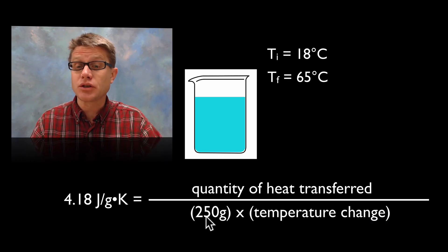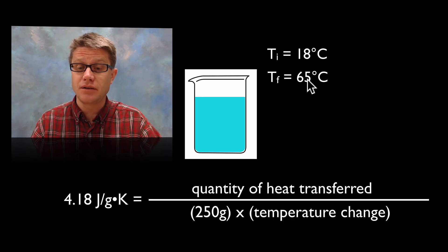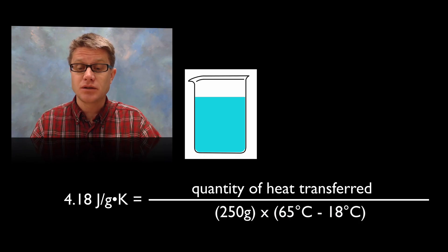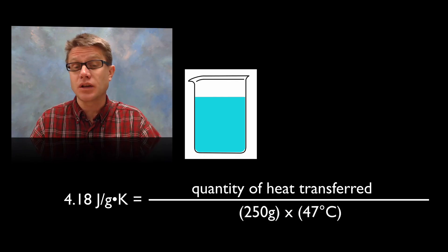We also know the temperature change. So we're going from 18 to 65. And so we just take our final temperature minus our initial. And so that's going to be 65 minus 18. That's going to be 47 degrees Celsius.